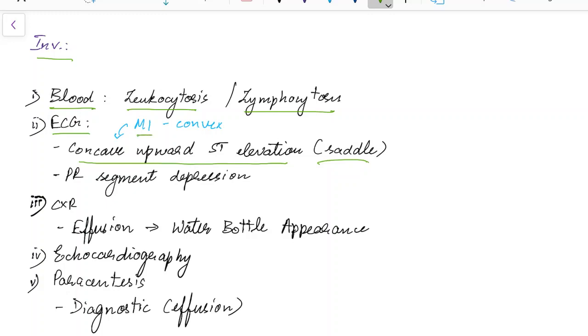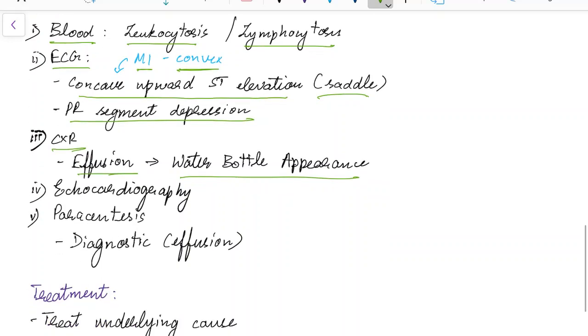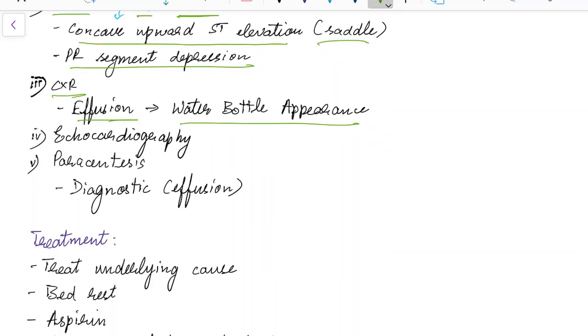In case of myocardial infarction there will be a convex upward ST segment elevation. In acute pericarditis there will be PR segment depression. Chest x-ray can be taken. If there is an effusion due to acute pericarditis there will be water bottle appearance. Echocardiography can be done to confirm acute pericarditis. Diagnostic paracentesis can be done if there is pericardial effusion.